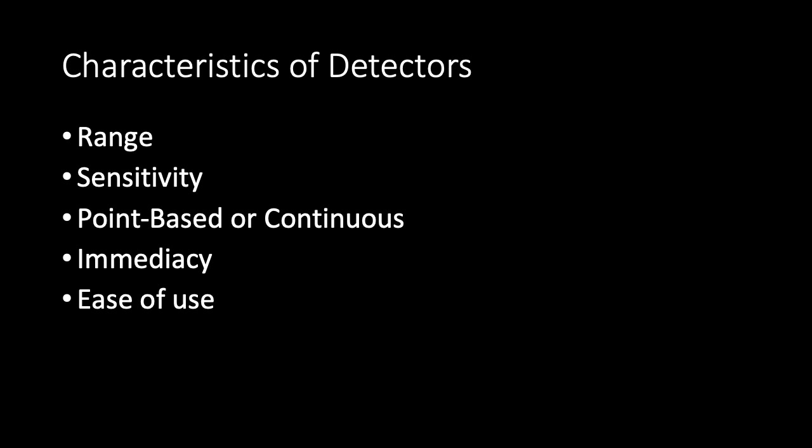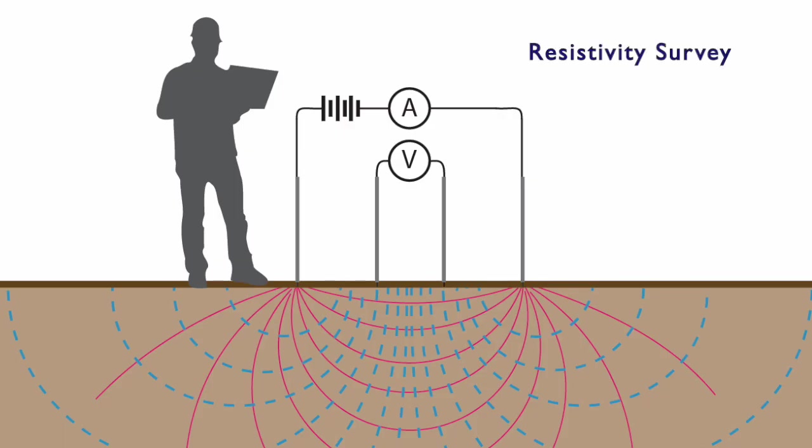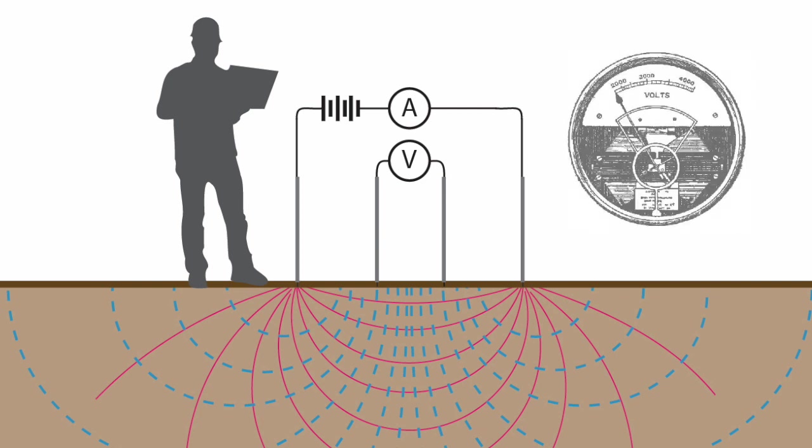The detectors we use in an archaeological survey all vary in their capabilities. In the case of resistivity survey, for example, we can vary the range with depth by changing the distance between the electrodes that are put in the ground.